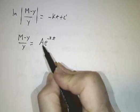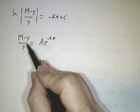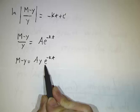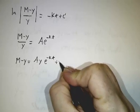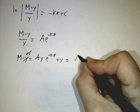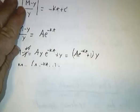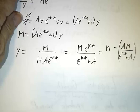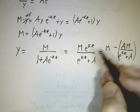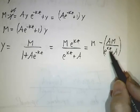We exponentiate both sides. We get that M minus y over y is a constant times e to the minus kt. And now we've got an algebra problem to solve to figure out what y is. M minus y is A y times e to the minus kt. You add y to both sides. And this is A e to the minus kt plus 1 times y. And so y is M over 1 plus A e to the minus kt. It's sometimes convenient to multiply the top and the bottom by e to the kt. And you can also write this as M e to the kt over e to the kt plus A.